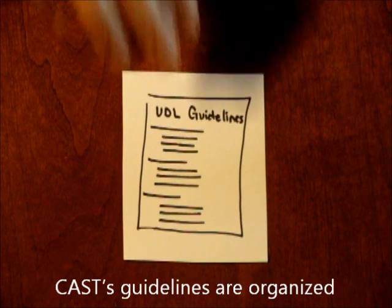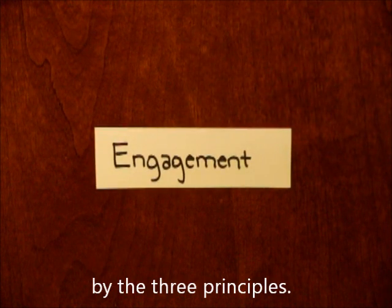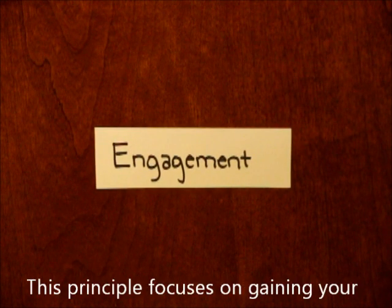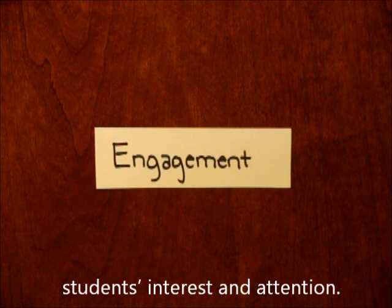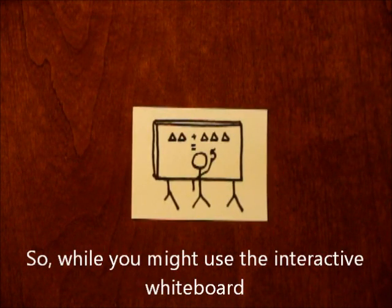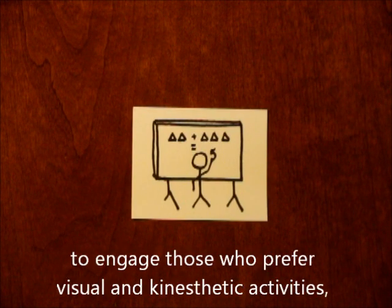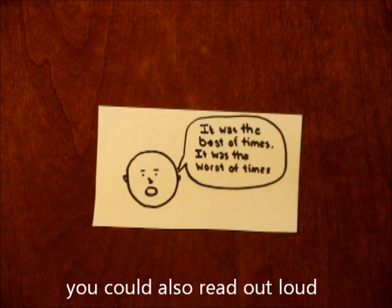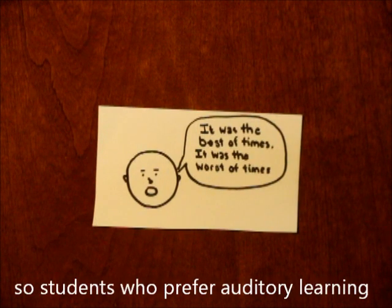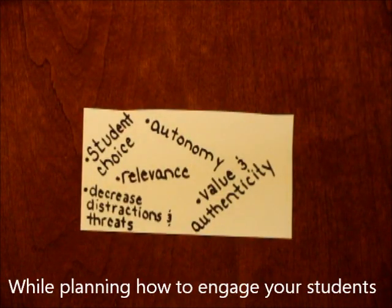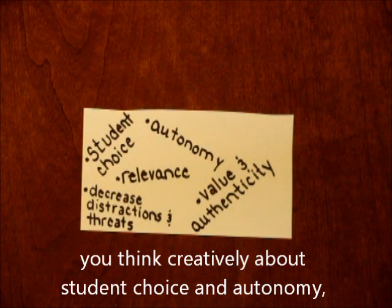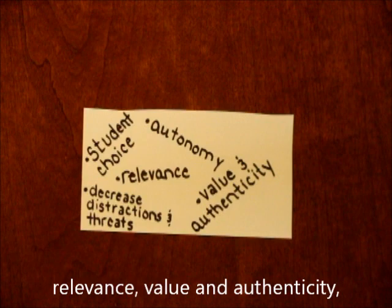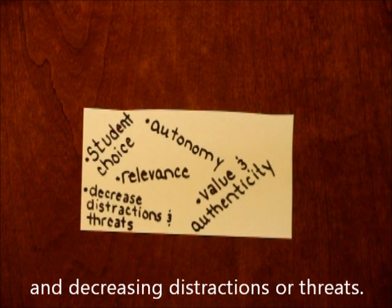CAST's guidelines are organized by the three principles. We'll start with engagement. This principle focuses on gaining your students' interest and attention. So while you might use the interactive whiteboard to engage those who prefer visual and kinesthetic activities, you could also read out loud so students who prefer auditory learning feel more connected to the lesson. While planning how to engage your students, you think creatively about student choice and autonomy, relevance, value and authenticity, and decreasing distractions or threats.